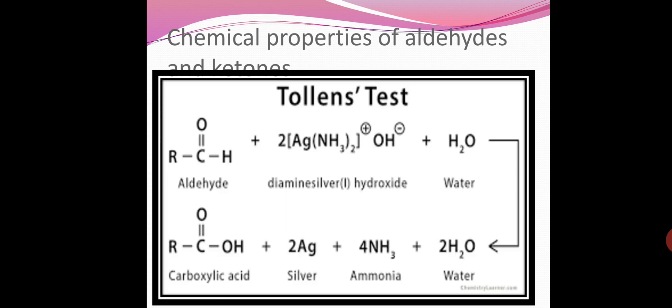Second test is Tollens reagent. Tollens reagent is an alkaline solution of silver nitrate. When aldehyde is added to Tollens reagent, a silver mirror is formed. In this reaction, aldehyde is oxidized to carboxylate ion and Ag+ is reduced to Ag.